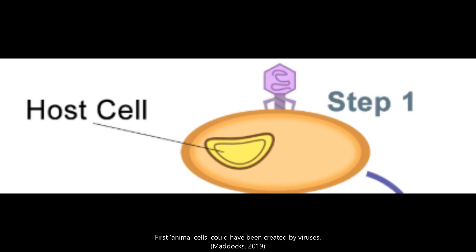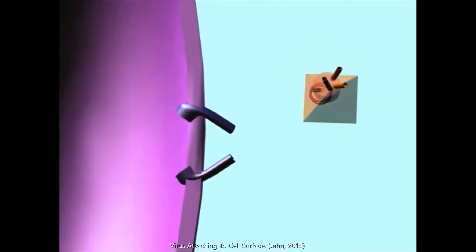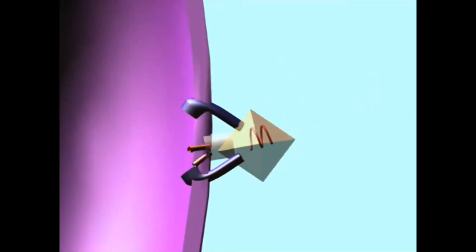The first stage of the lytic cycle is called attachment. In this stage, a viral body goes to its host cell and attaches to the surface of that cell.